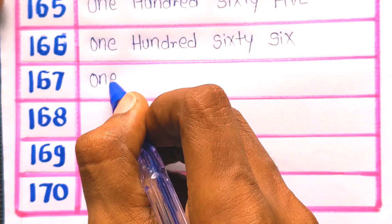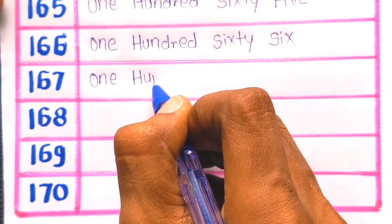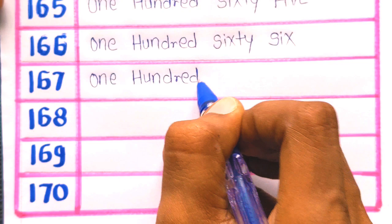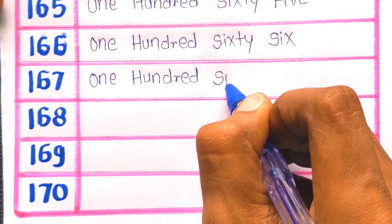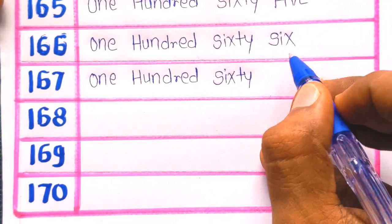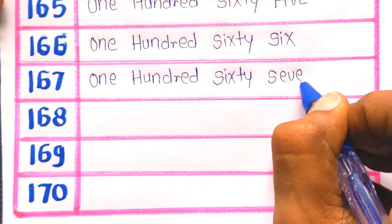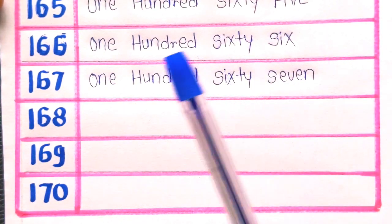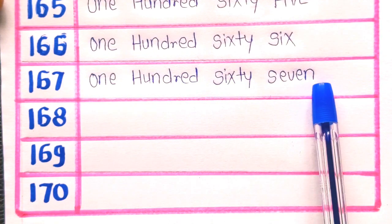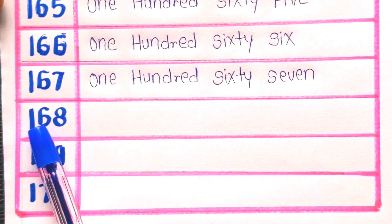Next number is 167: O-N-E, ONE, H-U-N-D-R-E-D, HUNDRED, S-I-X-T-Y, SIXTY, S-E-V-E-N, SEVEN. 167.